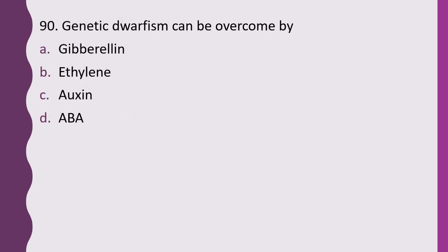Question 90. Genetic dwarfism can be overcome by: gibberellin, ethylene, auxin, or ABA. The correct answer is option A, gibberellins.